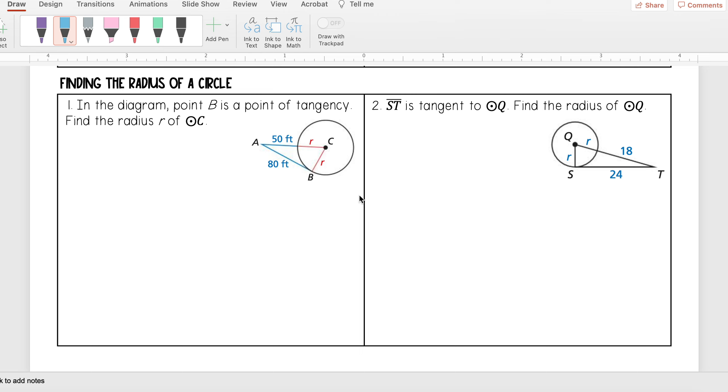For this next video we're going to be looking at finding the radius of a circle. For number one, in the diagram, point B is a point of tangency. Find the radius R of circle C.